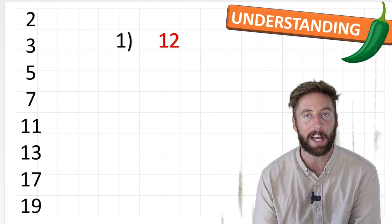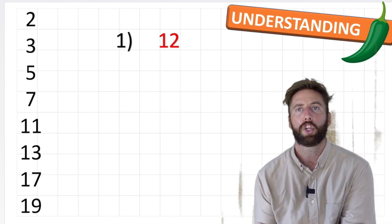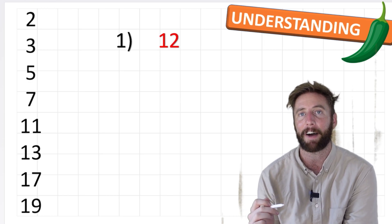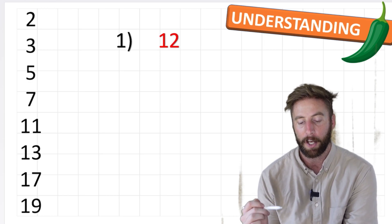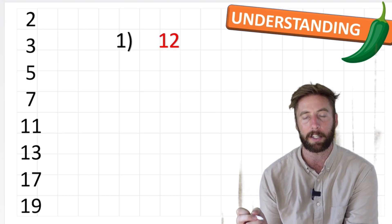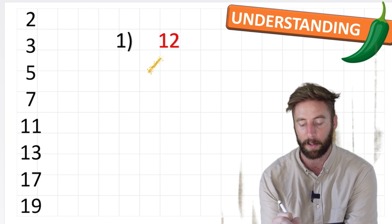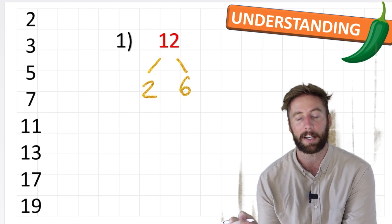Okay, so let's look at our green chili challenge and look at the number 12. So when we're looking for the prime factors, what we're trying to do is get our factor tree right the way down to prime numbers. Now, what does that mean? Well, what it means is we can get our 12 and we can find a set of factors. So let's do it with 2 and 6.